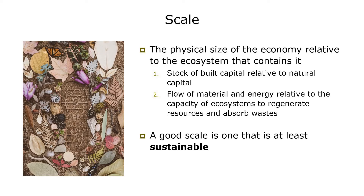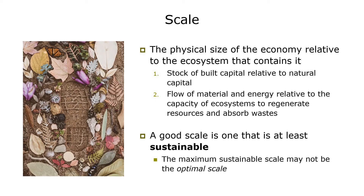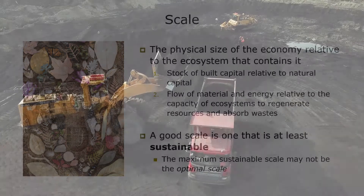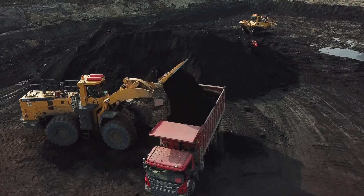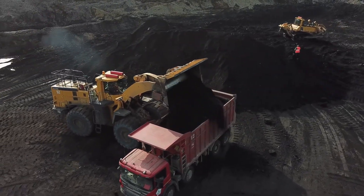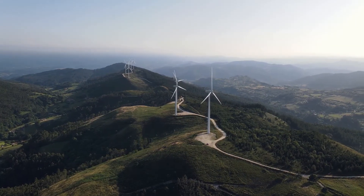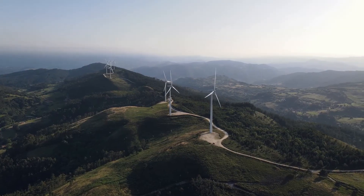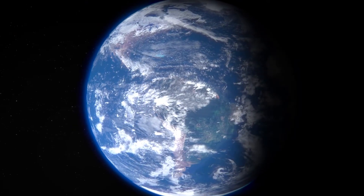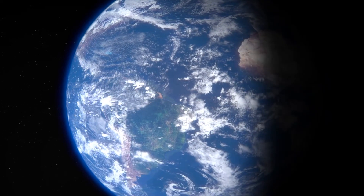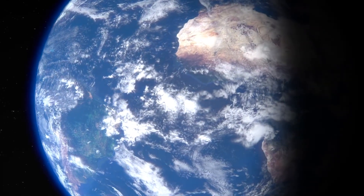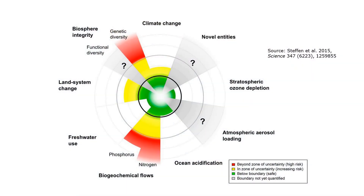A good scale is one that is at least sustainable — that is, within ecosystem limits. However, the maximum sustainable scale may not be the optimal scale; the optimal scale may very well be less than the maximum sustainable one. For example, the cost of economic growth may begin to exceed its benefits well before the maximum sustainable scale is reached. One way to achieve sustainable scale would be to put a cap on resource use — to put limits on the use of key resources such as fossil fuels, forests, and fisheries, based on the best scientific evidence available. Although the natural sciences are very important here, any decision on scale is ultimately a normative social decision. Crossing planetary boundaries does not mean instant collapse of ecosystems, but the more and the longer we transgress these boundaries, the greater the risk our society is taking.